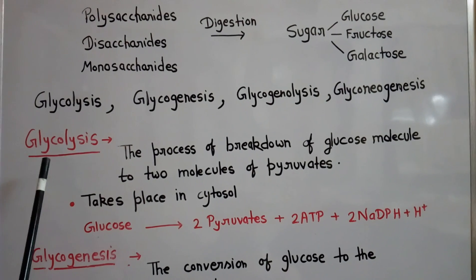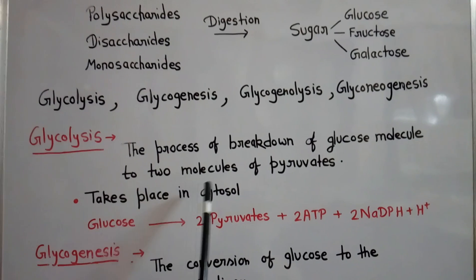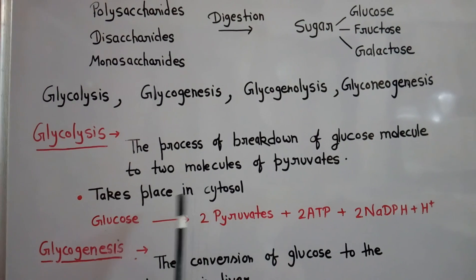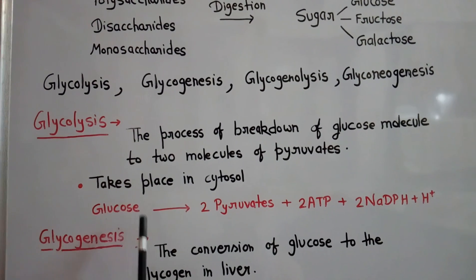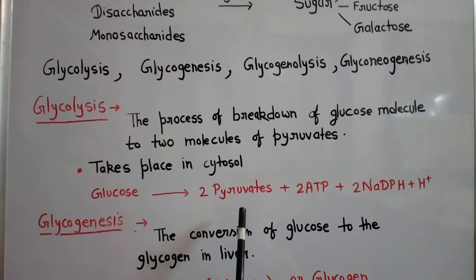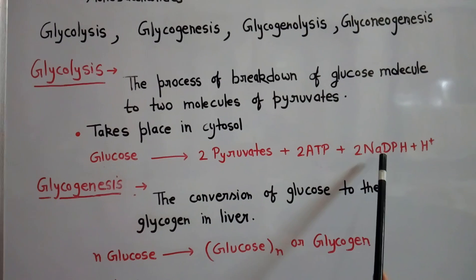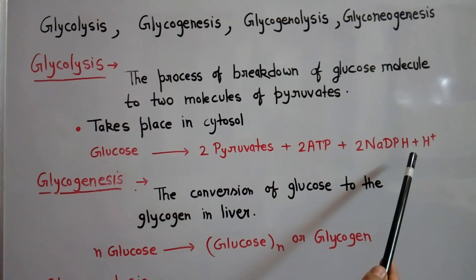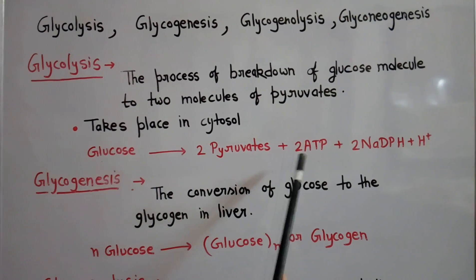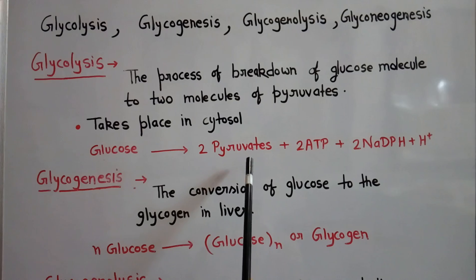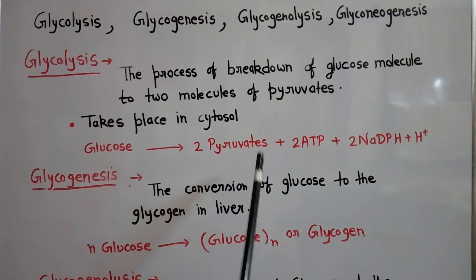Firstly, glycolysis. Glycolysis means the breakdown of glucose molecules to two molecules of pyruvates. This process takes place in the cytosol of the cell. One molecule of glucose gives two molecules of pyruvates, two molecules of ATP are synthesized, and two molecules of NADH are produced. The pyruvate then undergoes the citric acid cycle to give more molecules of ATP.